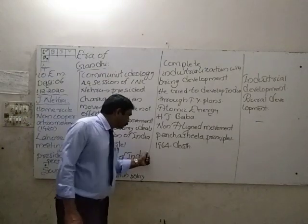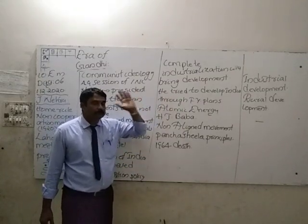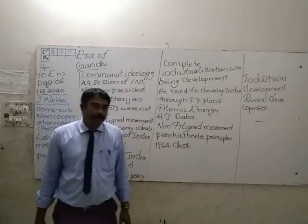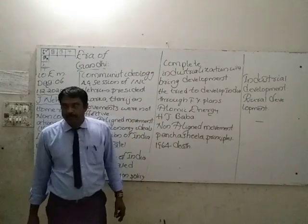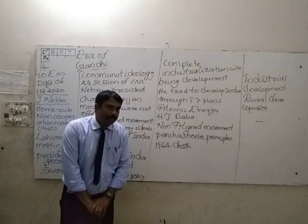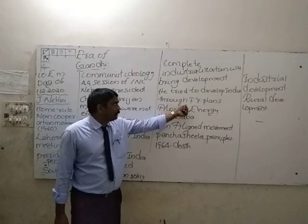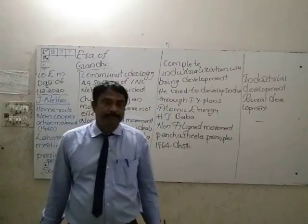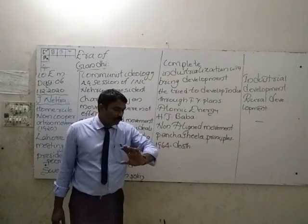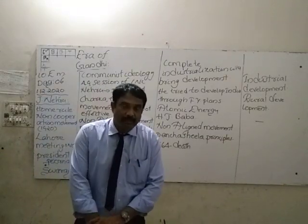Nehru believed that complete industrialization would bring development to India. He had his own ideas regarding the development of India. He tried to develop India through Five-Year Plans. Five-Year Plans means a plan completed within a period of five years. It was Soviet Union of Russia that started Five-Year Plans for the first time.